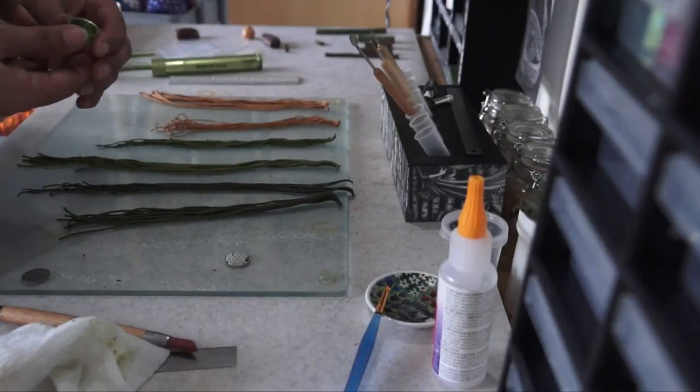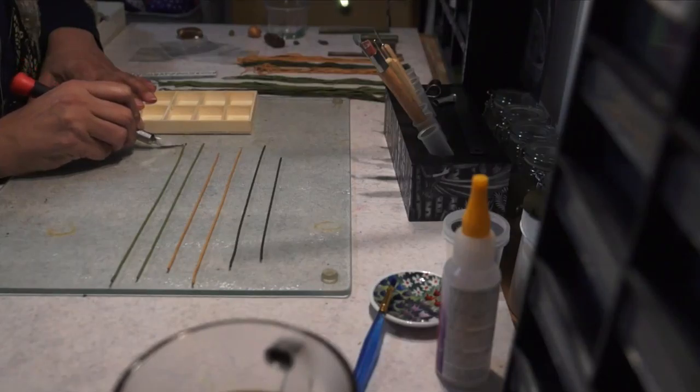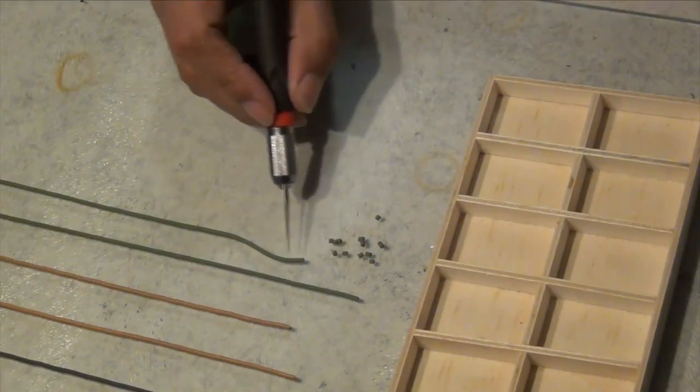Now I have my strings and some I will use directly for decorating the bowl and some I will reshape into my fourth decoration. Tiny balls in different sizes.